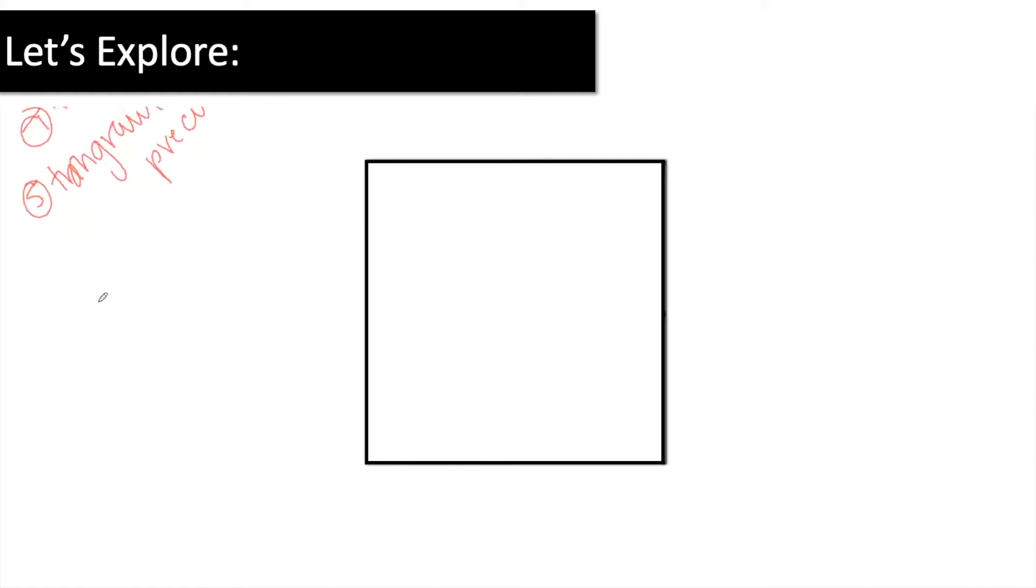just this big square to get kids started to make sure we don't have any mess-ups before we get into the actual exploration. And then you need scissors. Every kid needs scissors, and you need a baggie for every kid because we're coming back to these tangrams, and we want to make sure they can save them.